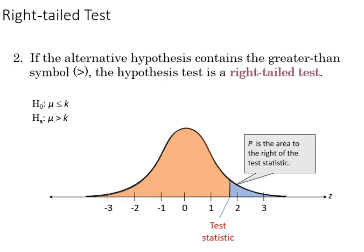This is the opposite, where the p value is on the right, and so the null here is that mu is less than or equal to k, and therefore the complement mu is greater than k.